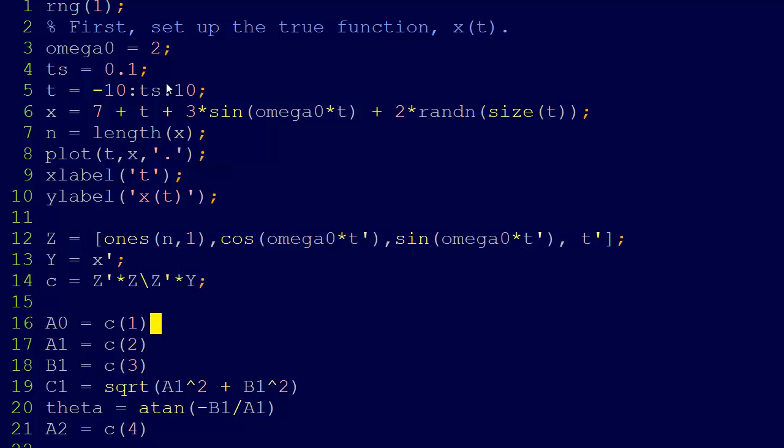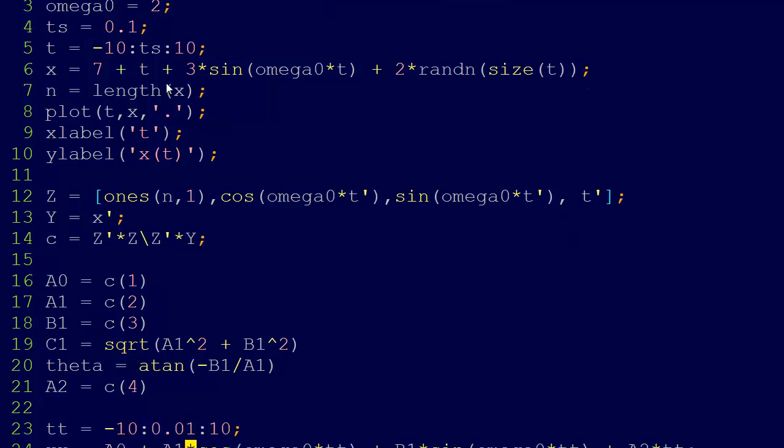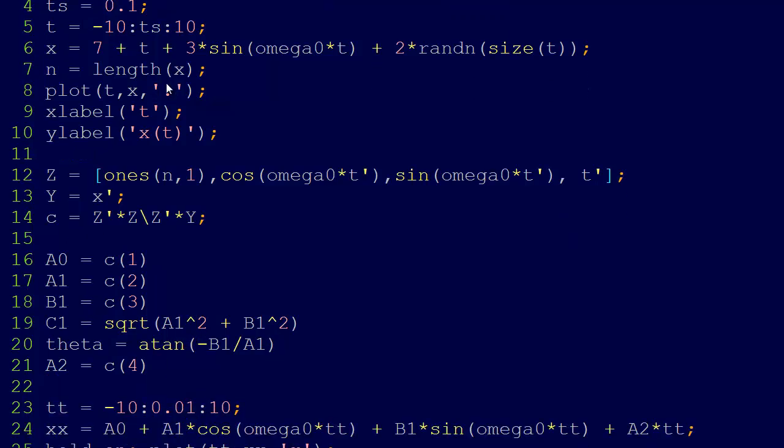And now I'm just de-scrambling the coefficients. So a naught was the first coefficient. a1 is the second coefficient. b1 is the third coefficient. And then c1, which was the alternative way of representing it, was just as a single sine instead of two put together. So then we have the c1 and this theta that we could come up with. But we don't even need to do that. We can just plot it out here like I've done.